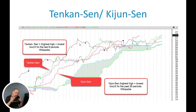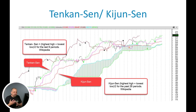The Kijun-Sen indicator does the same thing, but instead of looking at nine periods, you're looking at 26 periods — the exact middle price from the highest it's been in 26 days to the lowest it's been in 26 days. I kind of relate them in my mind to moving averages, because you're comparing a shorter median price to a longer median price. Anything you know about moving averages and how they correlate and cross translates very naturally, as long as you understand exactly how those are being calculated.